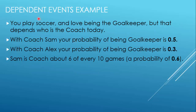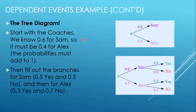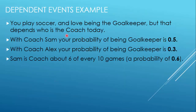Here is an example of a dependent event. Suppose you play soccer and like to be a goalkeeper, but that depends on who is the coach on that day. With coach Sam, your probability of being goalkeeper is 0.5, and with coach Alex, your probability of being goalkeeper is 0.3. The probability of Sam being coach on that day is 0.6.